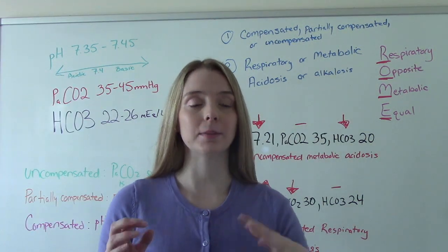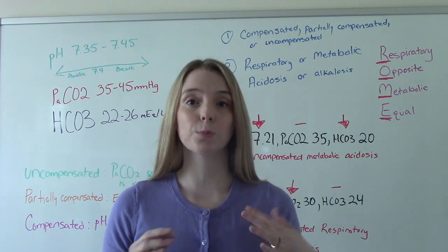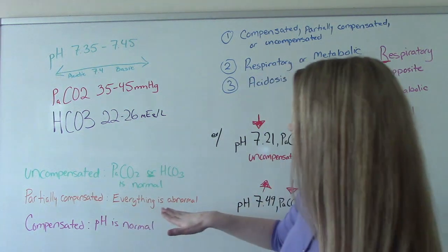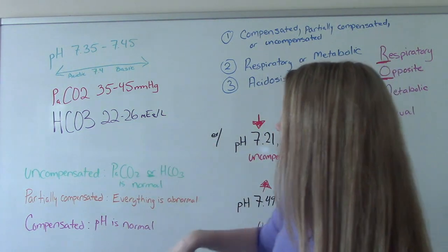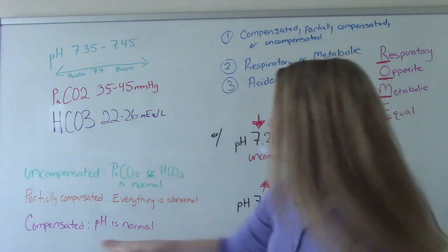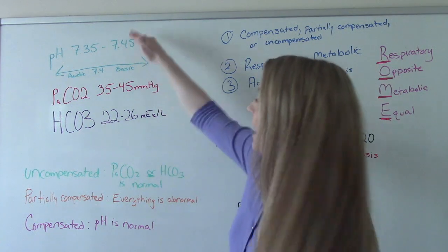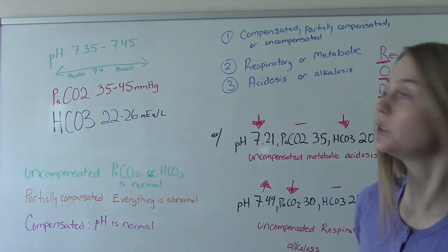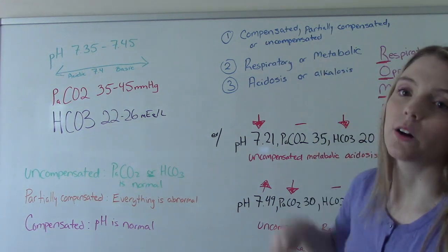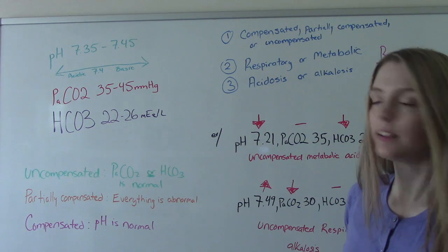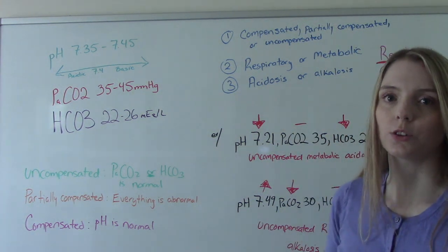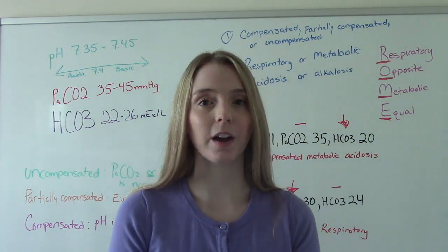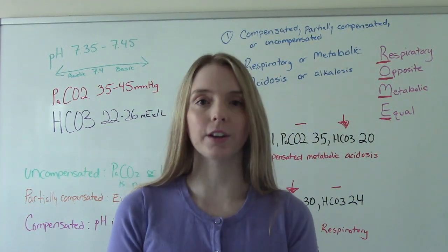ABGs can be a little scary and intimidating when you're first learning them, but the key is practice, practice, practice. Know these lab values — have them memorized. Know that uncompensated is when your PaCO2 or HCO3 is normal, partially compensated is when everything is abnormal, and compensated is when your pH is normal. Then follow your three steps: first, compensated, partially, or uncompensated? Second, respiratory or metabolic? Third, acidosis or alkalosis? Putting the pieces of the puzzle together in three easy steps. I hope you found this helpful — if you have questions or comments, please let me know, and I'll see you in the next one.